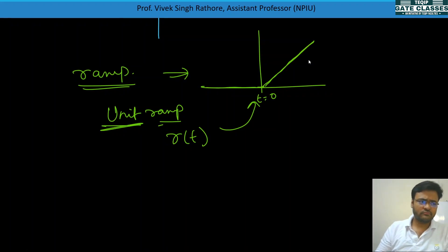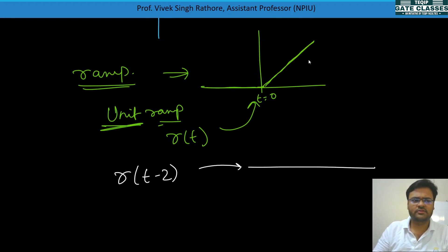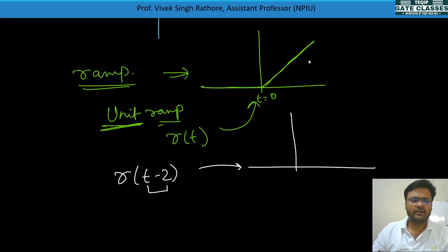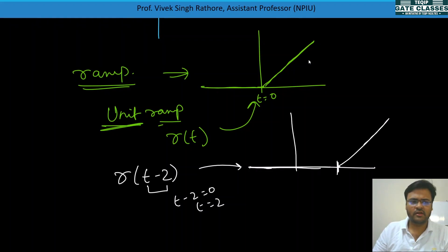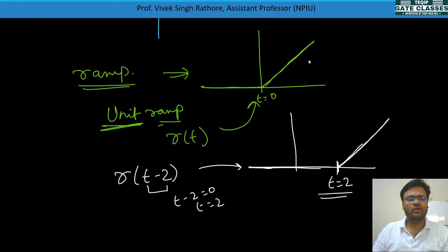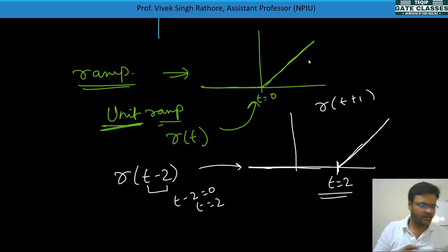For r(t − 2), set t − 2 = 0 to get t = 2. So there is a unit slope change at t = 2. Similarly, r(t + 1) has a slope change at t = −1.